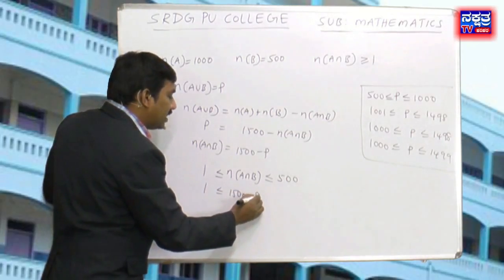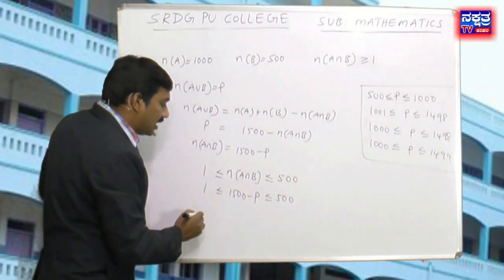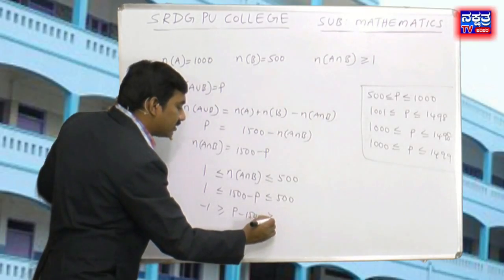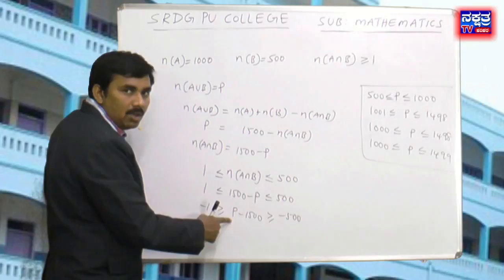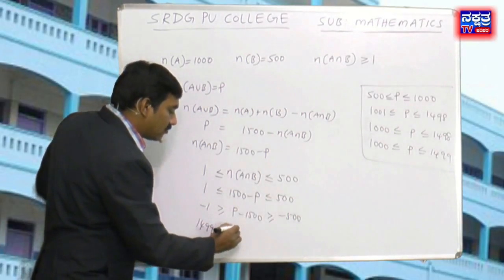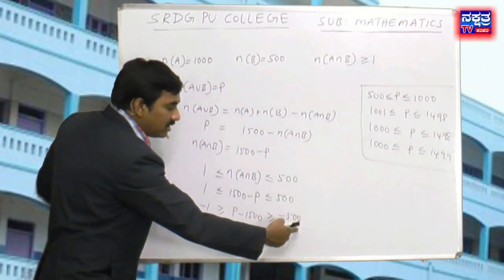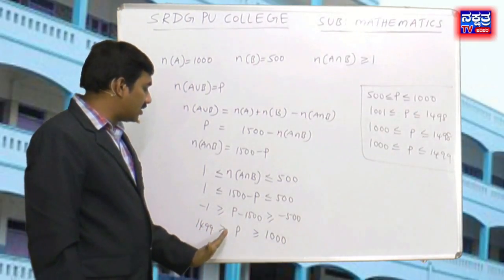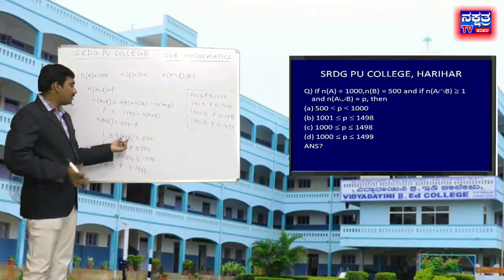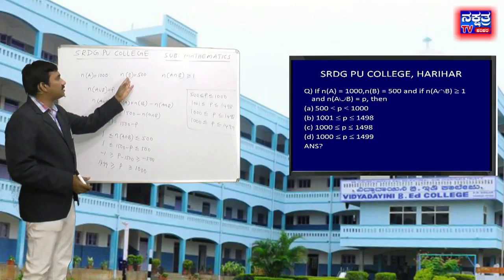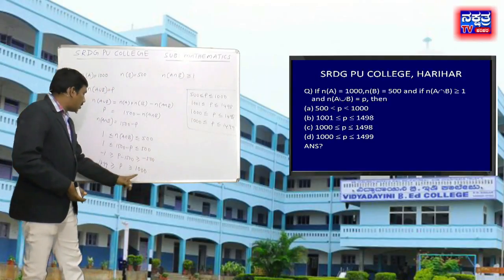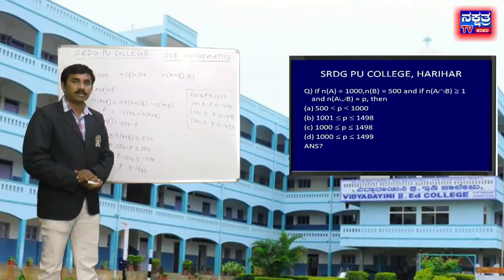Solving: multiplying through by −1 reverses inequalities. Adding 1500 to all terms: 1499 ≥ p ≥ 1000. The key point: n(A∩B) ≤ min(n(A), n(B)) = 500. Therefore the range of p is 1000 ≤ p ≤ 1499, so option D is the correct answer.